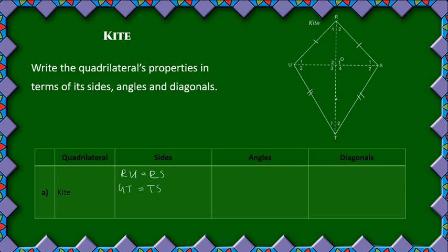Then for the angles, what is equal is these two opposite angles — angle R and angle T — are equal, giving us angle RST. And for the diagonals, we can see that these diagonals bisect each other, so UO is equal to SO.